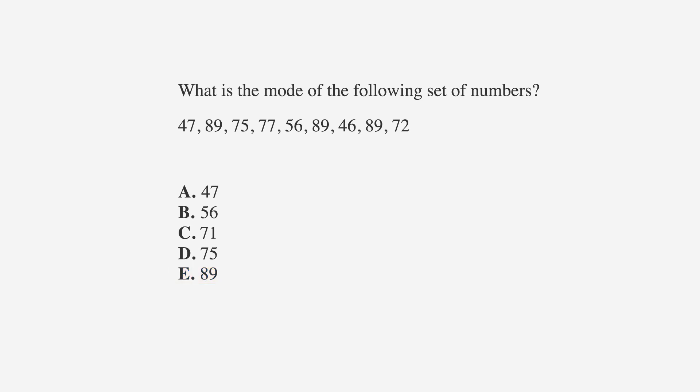First we'll underline the facts, circle the keywords, and label the answer choices. Next, we should take note of any numbers that are repeated, starting with our answer choices. 47 only appears once, as does 56, 71 isn't even in the set, and 75 is only once. The only one that is repeated is 89, and since 89 occurs 3 times, and the other numbers all only occur once, 89 is our mode, choice E.